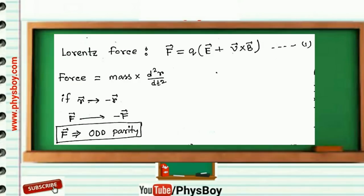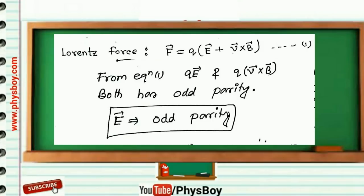Now q(v⃗×B⃗), this whole term is odd parity. But v⃗ can be written as dr⃗/dt, so if we transform r⃗ to -r⃗, then v⃗ will also transform to -v⃗.